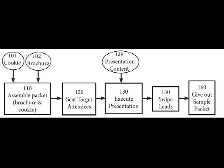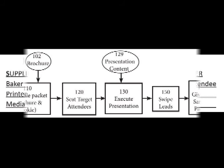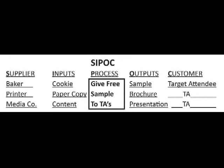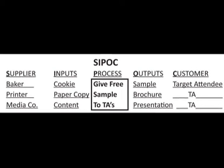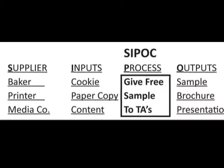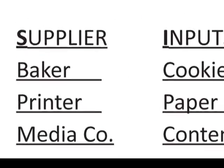To better explain how to create a SIPOC, let's go back to our example from our previous process mapping lesson, where we had an exhibitor who was trying to do an awareness program where they were passing out a cookie and brochure packet, having attendees go to a presentation, and then swiping leads for them. The SIPOC starts by simply taking the specific process step and listing the suppliers or service providers who are needed for the step in a column. In this example, the suppliers are the baker, the printer, and the media company who will do the presentation.